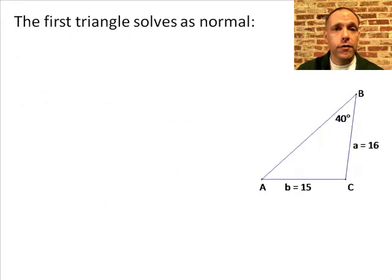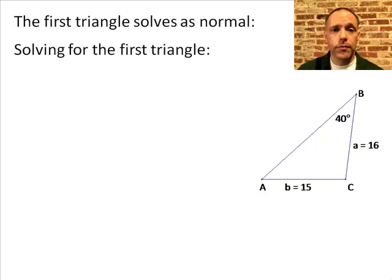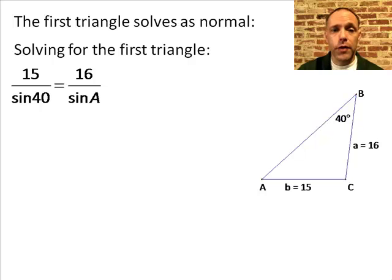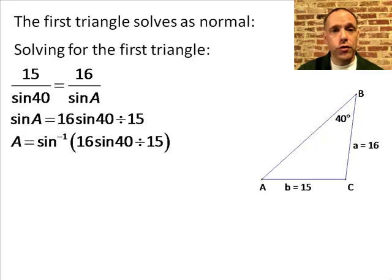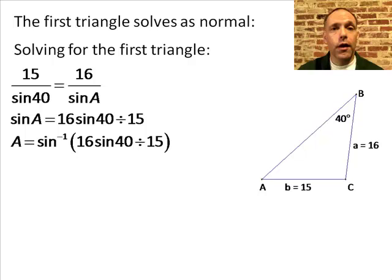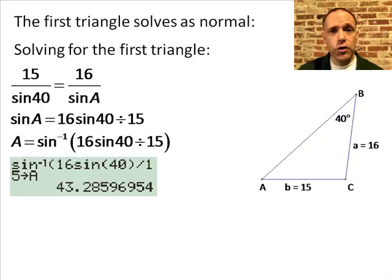The first triangle solves like any normal law of sines triangle. So solving for that triangle, we set up our proportion with the information that we have. We solve for the sine of angle A using the cross products, and we need to take the arc sine of that to find the measure of angle A. I'm going to store that in my calculator's memory. From the screenshot, angle A measures about 43.3 degrees.